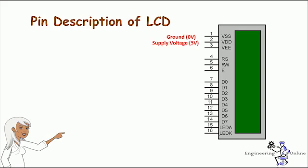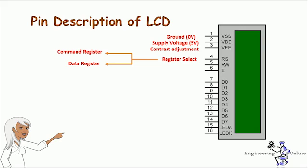In the 14 pins there are 8 data pins, 2 power supply pins, one pin for contrast control, and three control pins — register select, read/write, and enable. Pin 1 is VSS connected to ground; pin 2 is VDD connected to 5 volts; pin 3 is VEE for contrast control, which controls how thick the characters appear on the display. Pin 4 is the register select pin. There are two types of registers: command register and data register.